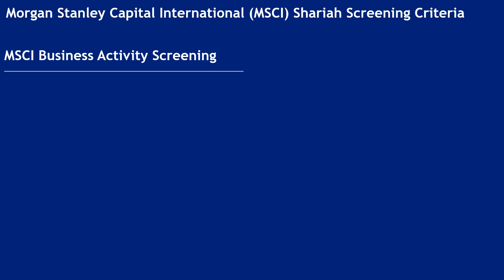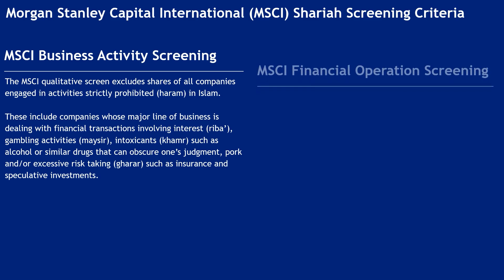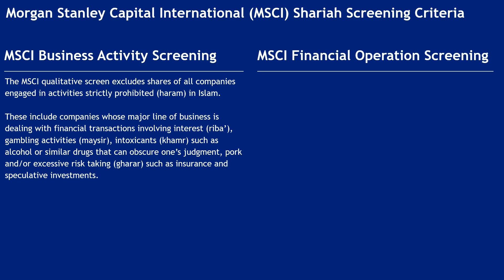Morgan Stanley Capital International (MSCI) Shariah Screening Criteria — Business Activity Screening. The MSCI qualitative screen excludes shares of all companies engaged in strictly prohibited activities in Islam. These include companies whose major line of business involves financial transactions with interest, gambling, intoxicants such as alcohol or similar drugs that can obscure judgment, pork, and excessive risk-taking such as insurance and speculative investments.